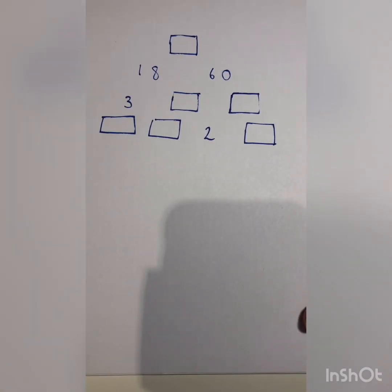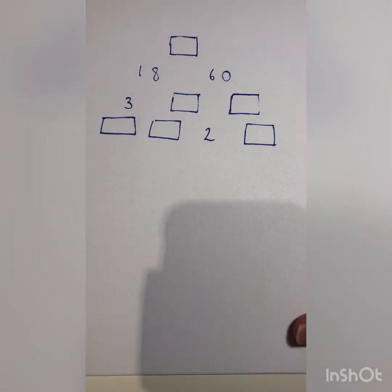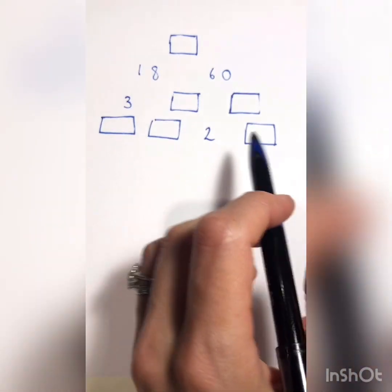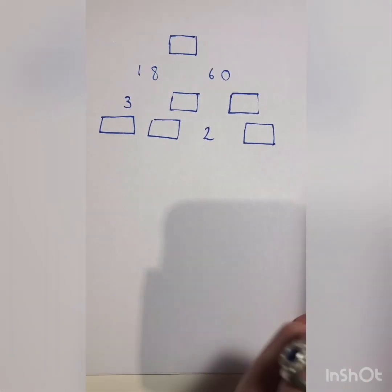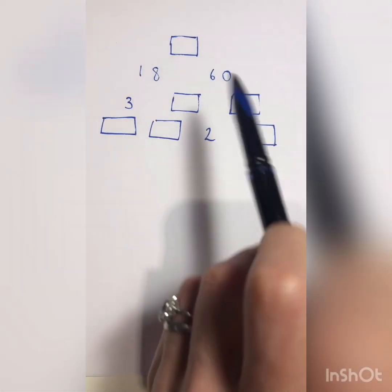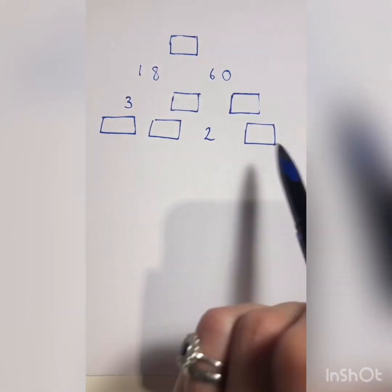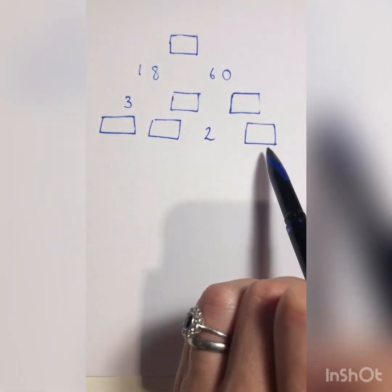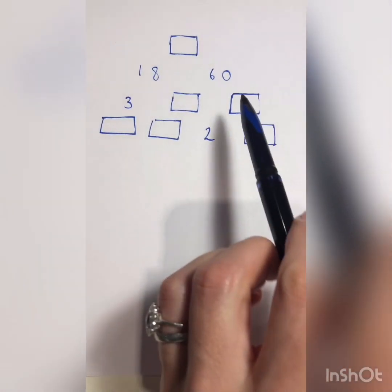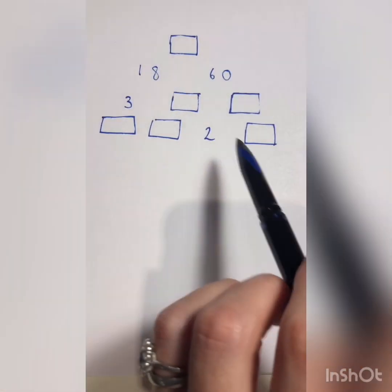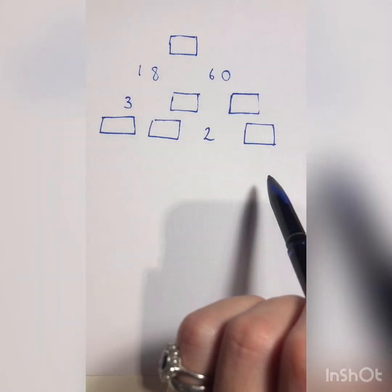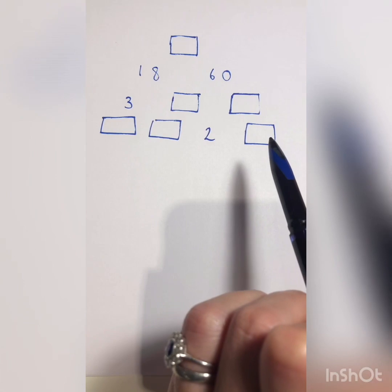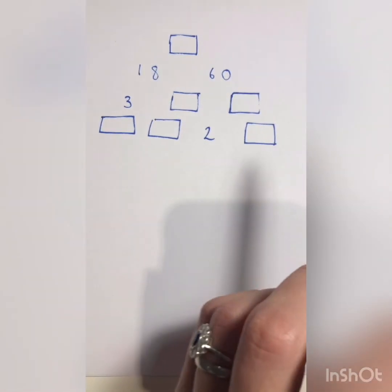Just based on the example I did before, I'd like you to have a go at this one. Have a think about how the numbers link and where you should start — you can't start at the bottom, so think about where the two numbers are closest together and what you can do with that. Press pause, have a go, and then I'll explain.